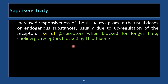Another important example: beta-1 receptors in the heart — if they are blocked for a longer period, their number increases and up-regulation occurs. Similarly, cholinergic receptors blocked by thioxanthines (one of the antipsychotics) also show up-regulation, producing increased responsiveness or supersensitivity.